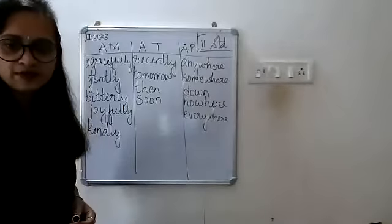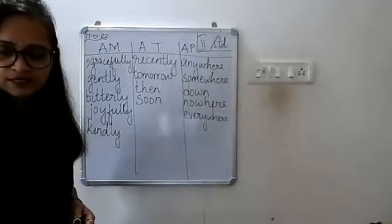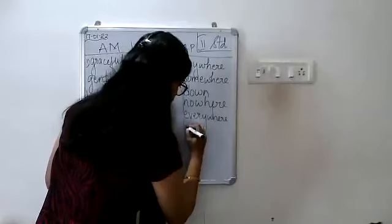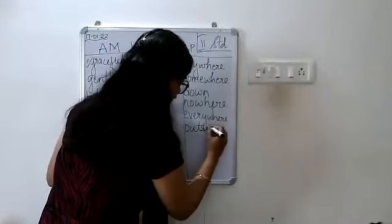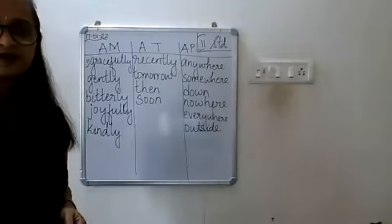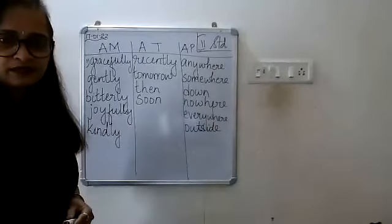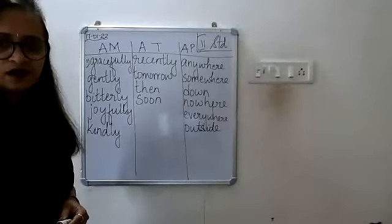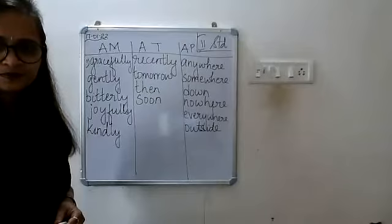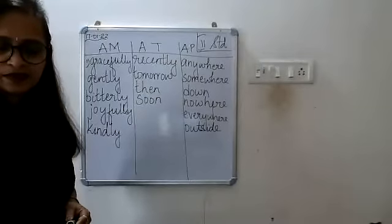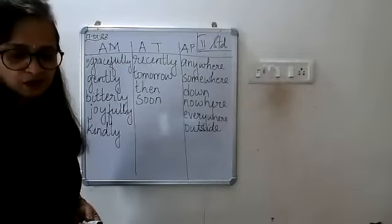Next word is 'outside' — adverb of place, very good. Under the place column write 'outside' — O-U-T-S-I-D-E. Then 'softly' — adverb of manner. Below 'kindly,' write S-O-F-T-L-Y.